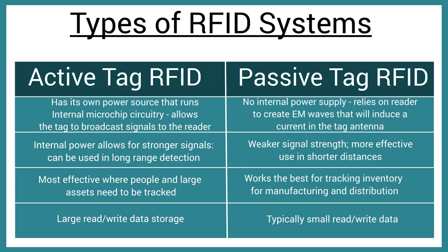Passive tag systems are more common in the automation industry. These do not have an internal power supply and rely on the reader to create electromagnetic waves. The waves are then used to induce a current in the tag antenna, thus allowing it to broadcast tag information. This tag type is most effective at shorter distances, typically for inventory tracking and manufacturing and distribution processes.